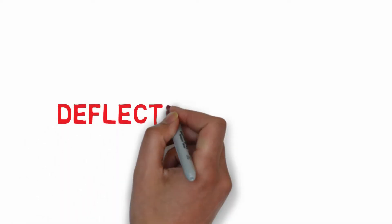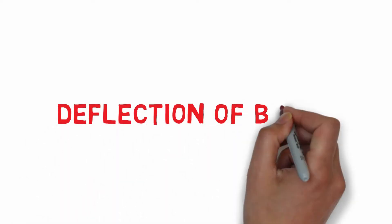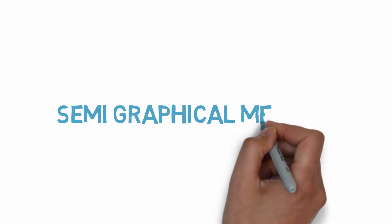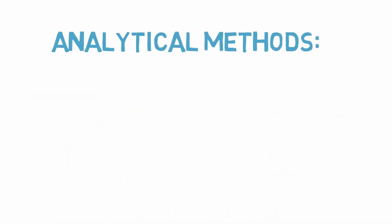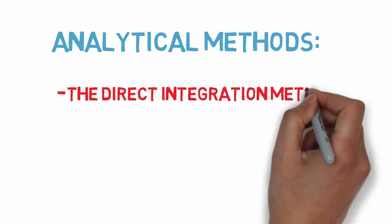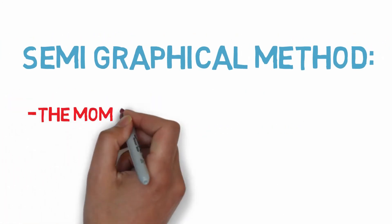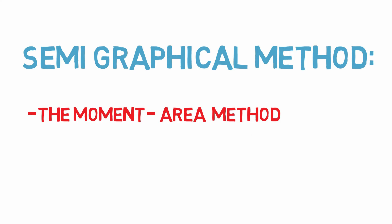Hello everyone. In this video we are going to discuss how to determine the deflection and slope of a beam caused by the effects of bending. The methods of determination of the deflection of a beam can be classified into two main categories: analytical methods and semi-graphical methods. Analytical methods include the direct integration method and the superposition method. The semi-graphical method is called the moment area method. In this video, we are going to discuss the direct integration method.